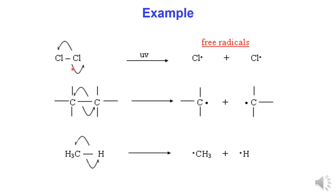Examples of homolytic cleavage: (1) For a chlorine molecule, the single bond between chlorine atoms is broken symmetrically under UV to produce free radicals — each chlorine atom has 1 unpaired electron. (2) A single bond between two carbon atoms is broken symmetrically under UV to produce free radicals, each carbon with 1 unpaired electron. (3) A single bond between carbon and hydrogen is broken symmetrically under UV to produce free radicals CH3 with 1 unpaired electron and hydrogen atom with 1 unpaired electron.